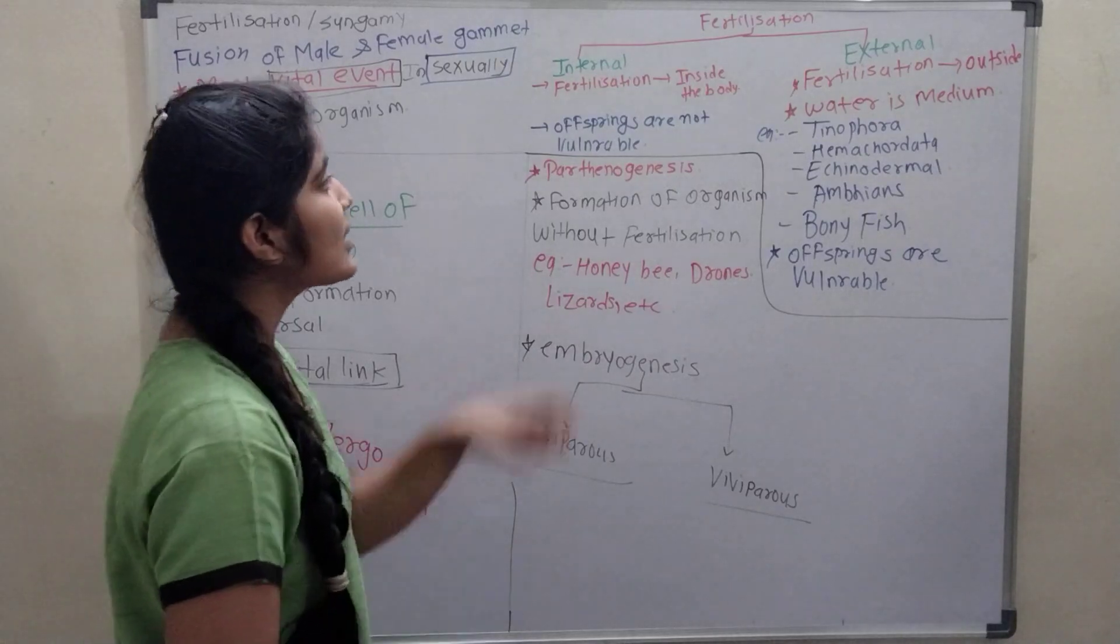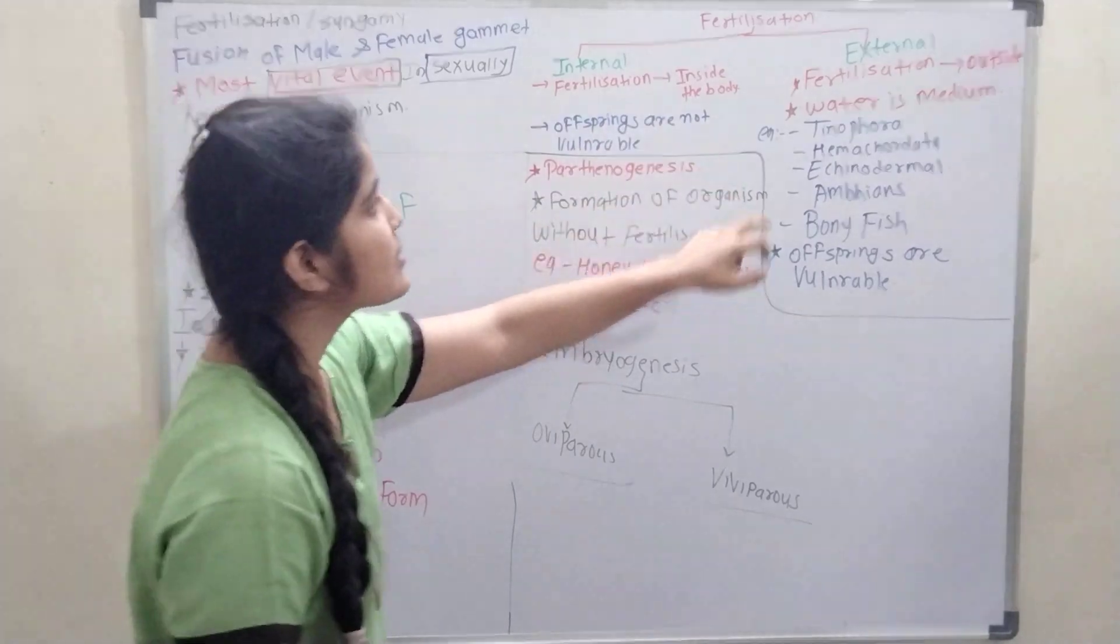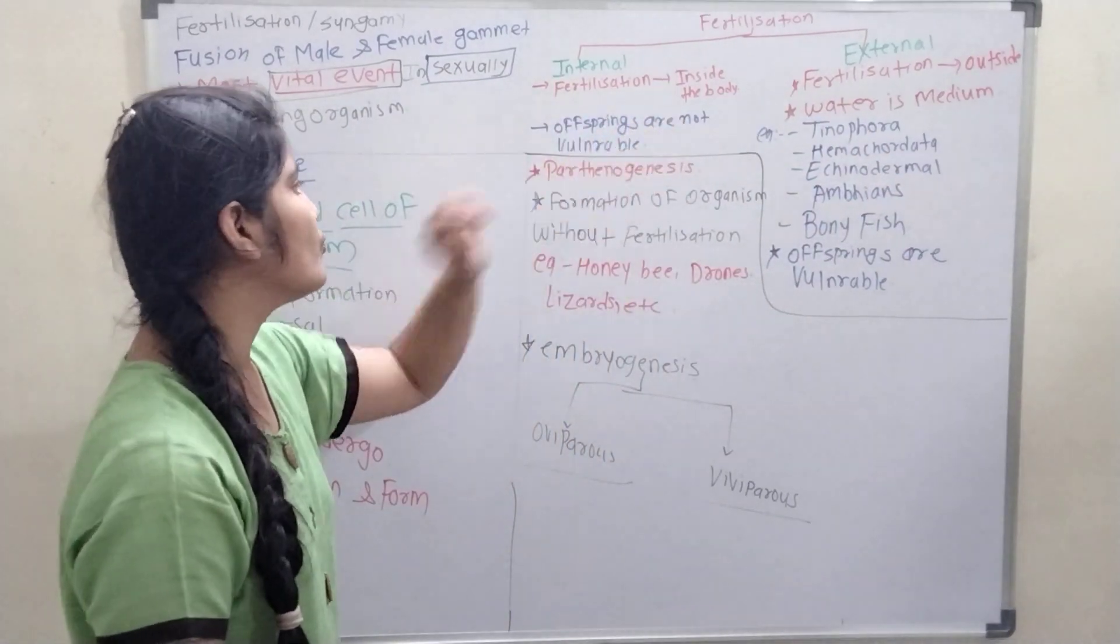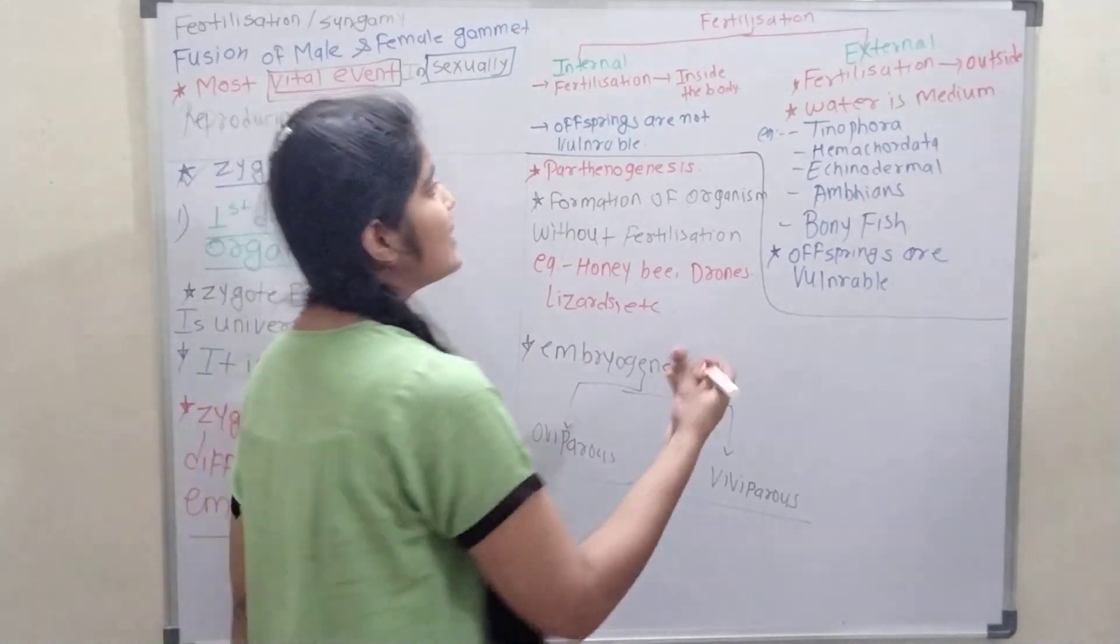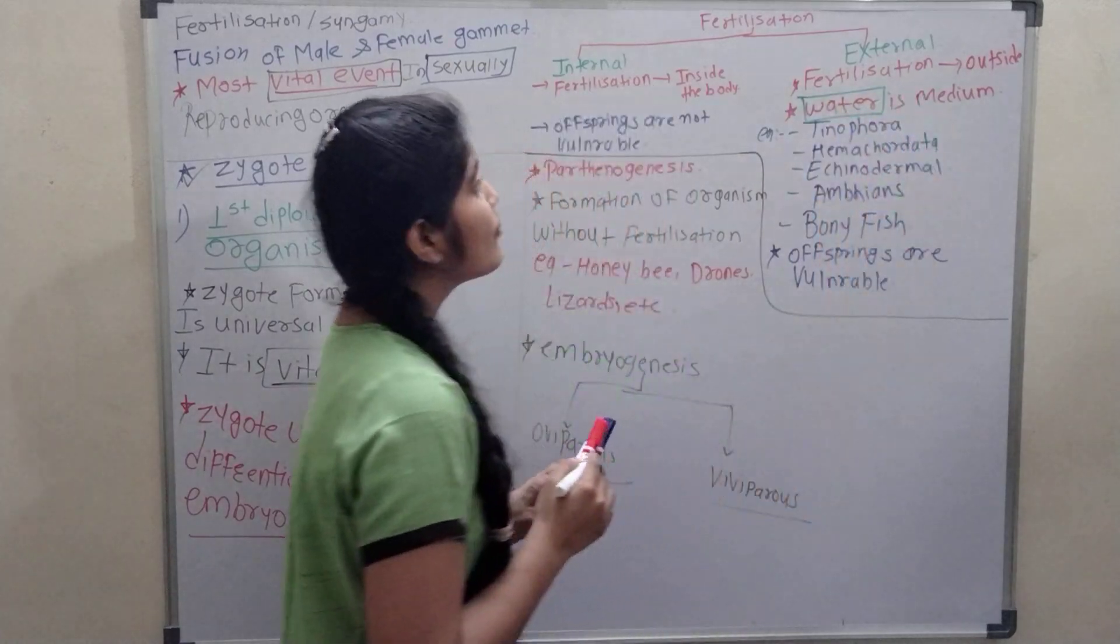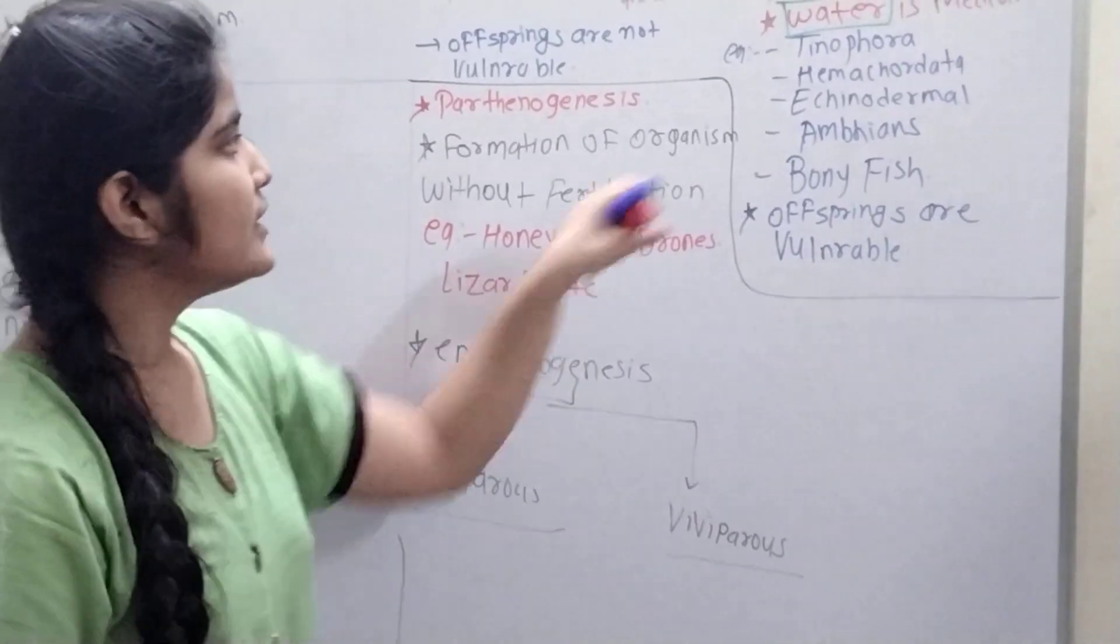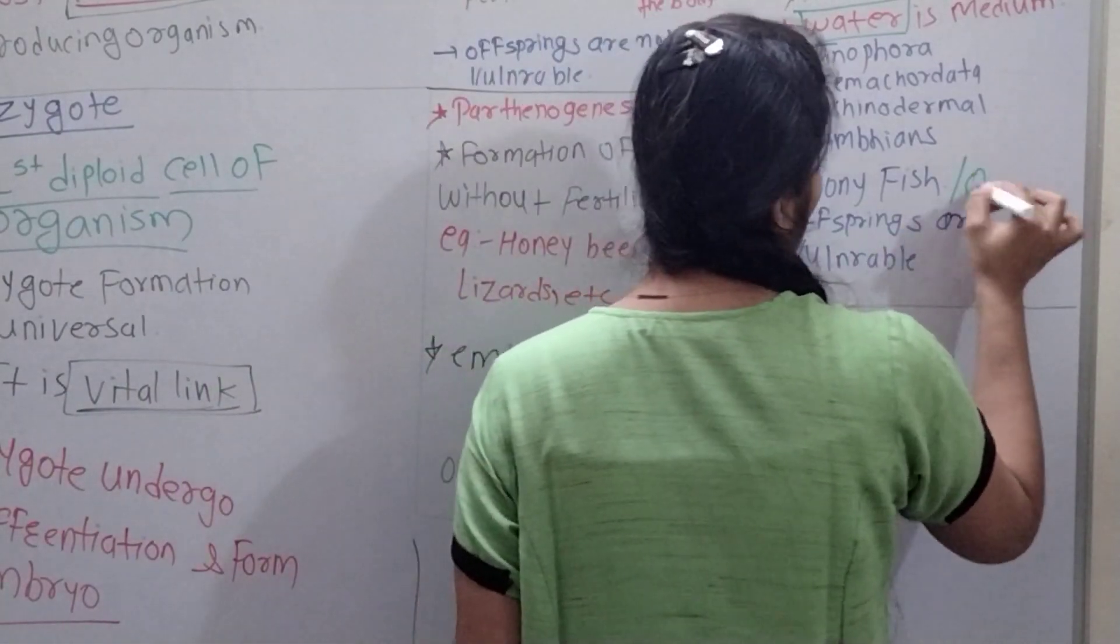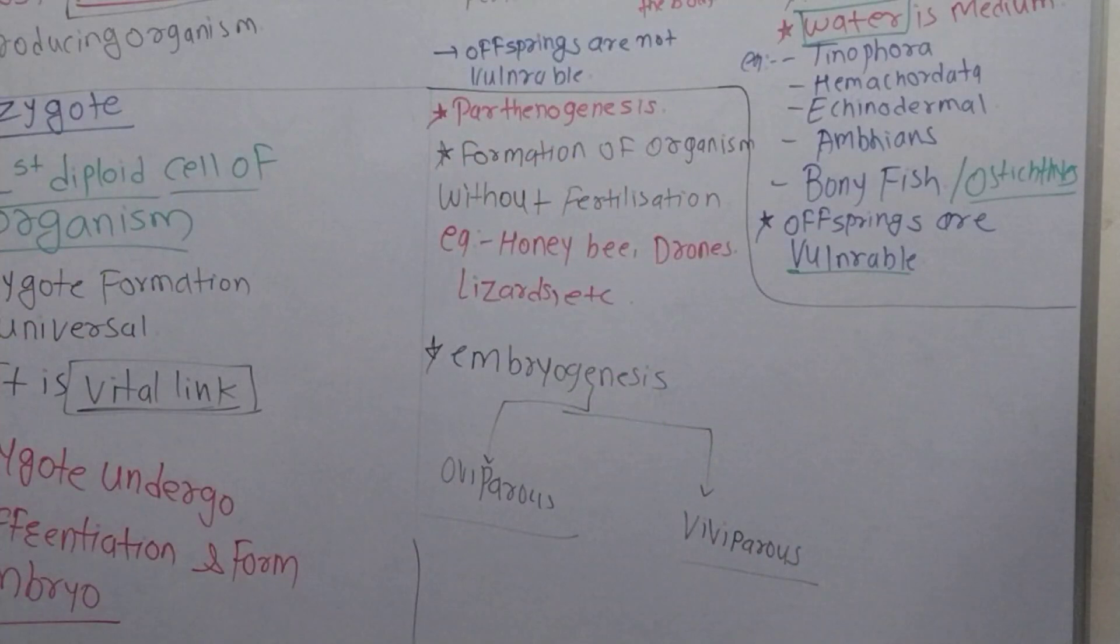Fertilization has some types: internal fertilization and external fertilization. Internal fertilization means fertilization inside the body. External means fertilization outside the body. In internal fertilization, offsprings are safe - not vulnerable. In external fertilization, offsprings are vulnerable. In external condition, external medium is required. Water is the external medium. Examples of external fertilization in animal kingdom: Ctenophora, Hemichordata, Echinodermata, amphibians, and bony fishes - Osteichthyes. These are vulnerable.